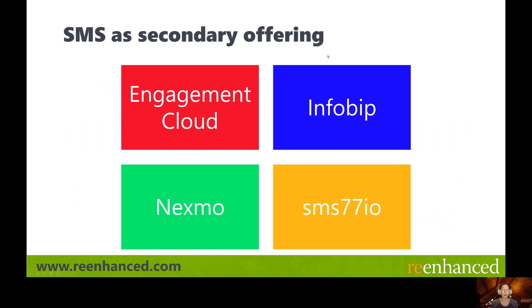Here are the four that have SMS as a secondary offering: Engagement Cloud — another company who provides multiple connectors — their Engagement Cloud offering includes a plethora of marketing automation, with SMS as one small part of that. Also InfoBip, Nexmo, and SMS77IO. If you're currently using any of these products today, they might be worth looking at.